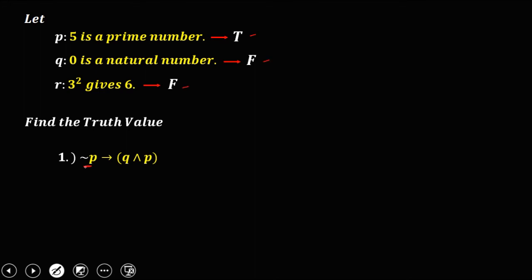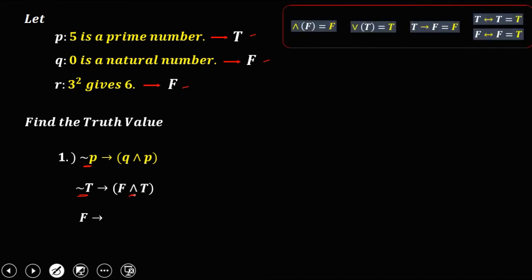Substituting: not p is not true, which is false. Then false AND q (false) — for conjunction, if there is false, the truth value is false — so that is false. For implication, only true implies false is false. Since this is false implies false, therefore this one is true. So the truth value of this compound expression is true.